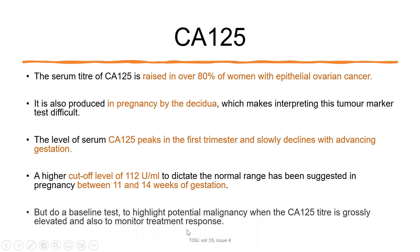Regarding tumor markers in pregnancy: serum CA-125 is raised in over 80% of women with epithelial ovarian cancer but is also produced from the decidua, so CA-125 levels rise during pregnancy, peaking in the first trimester and slowly declining with advancing gestation. The normal cutoff in a non-pregnant woman is 35 units/mL, but in pregnancy between 11 to 14 weeks, the cutoff is 112 units/mL. Therefore, when interpreting CA-125 in pregnancy, you must use pregnancy-adjusted cutoffs.